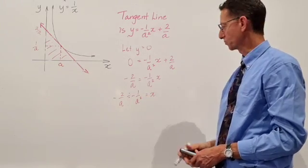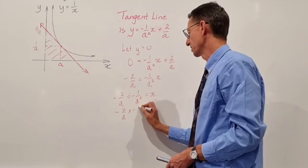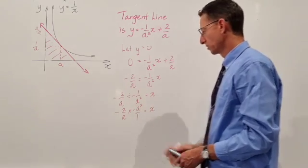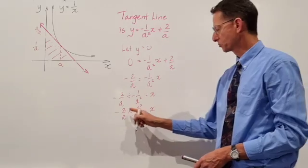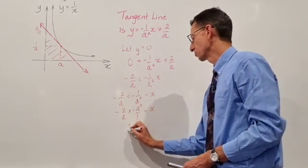And when we're dividing by a fraction, we can invert and multiply by that second fraction. So it becomes negative a squared on 1. And when we do that, what happens is we get the negative times the negative gives the positive value and we get 2a squared on a.